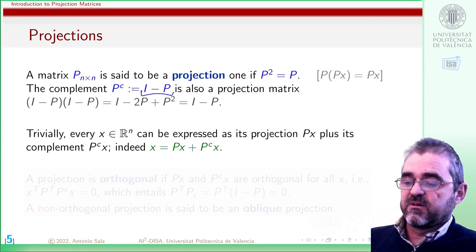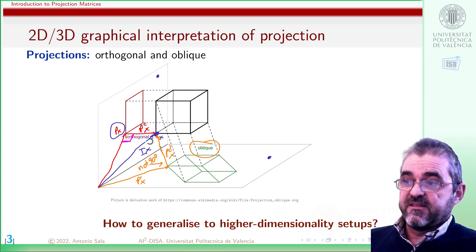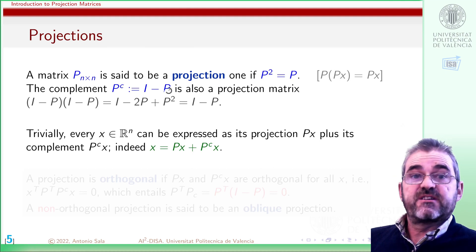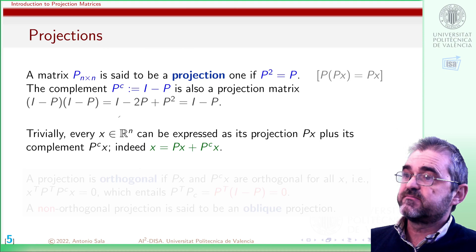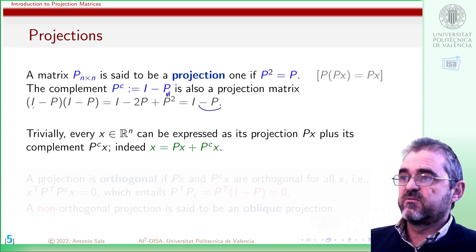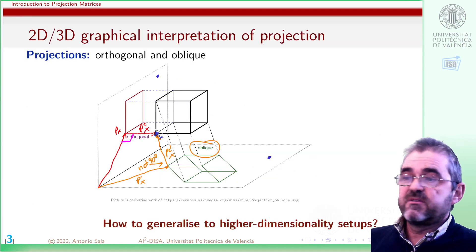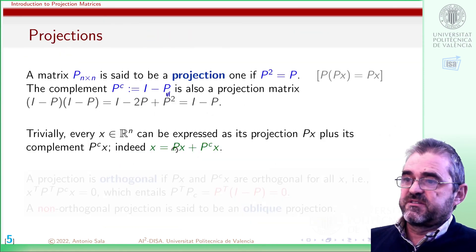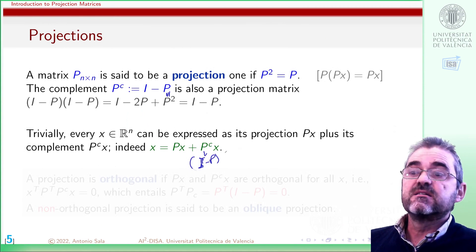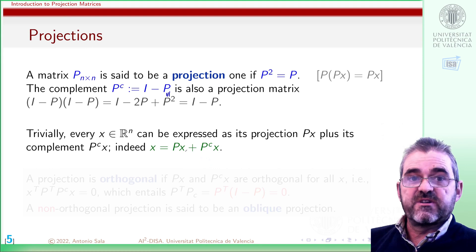The projection of a projection remains unaltered. Identity minus P is the complement — the complement of x is the difference between x and its projection Px. For curiosity, identity minus P is also a projection matrix, because squaring it gives identity minus 2P plus P squared, and since P squared equals P, the terms simplify so the square of this matrix equals itself. So the projection and its complement express any point as the sum of two projections: Px plus (I minus P)x equals x.